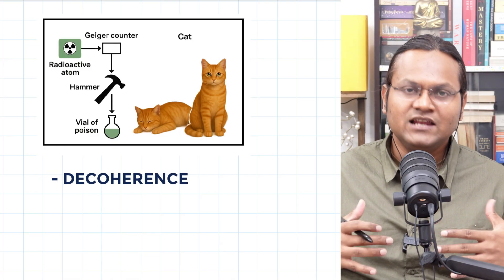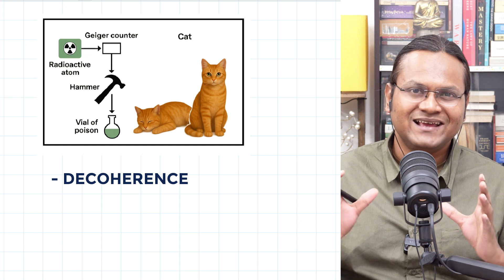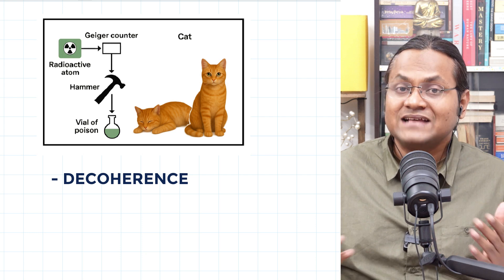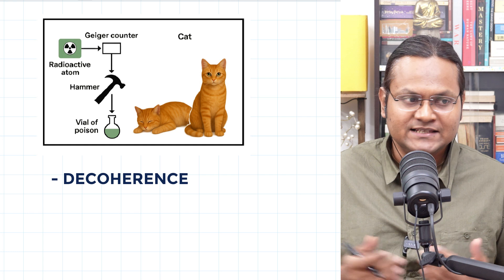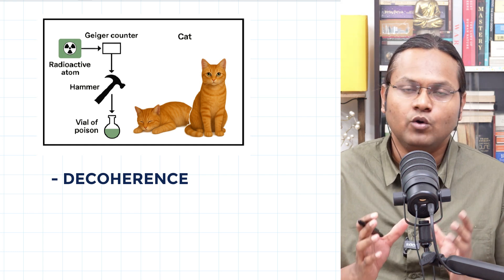But what is the most accepted explanation for this Schrödinger cat paradox, for the Copenhagen interpretation or the measurement problem? It is what is today known as decoherence. Decoherence is, in today's consensus of modern physics, the most accepted version of this problem that we are talking about, as in what happens to the cat. Is the cat really dead or alive? So let's first understand what decoherence is.